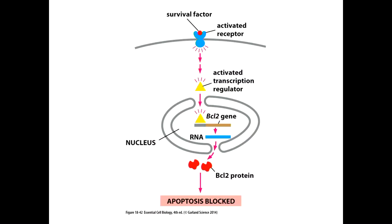Student question: nerve cells cannot be renewed — does that mean they don't divide and once they die, they're gone forever? Generally speaking, yes. The vast majority of neurons in adults — if you lose them, you lose them. However, there are parts of your brain that do have neuronal proliferation even in adults, and we're continuing to learn there are low levels of division in some parts of our nervous system we simply couldn't detect before. Whether it's physiologically relevant is a different question.